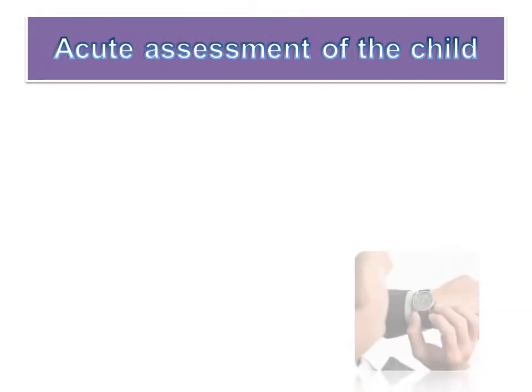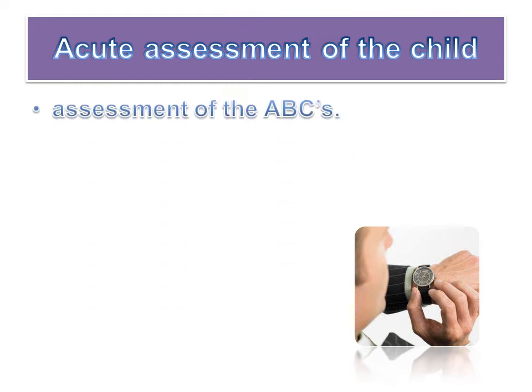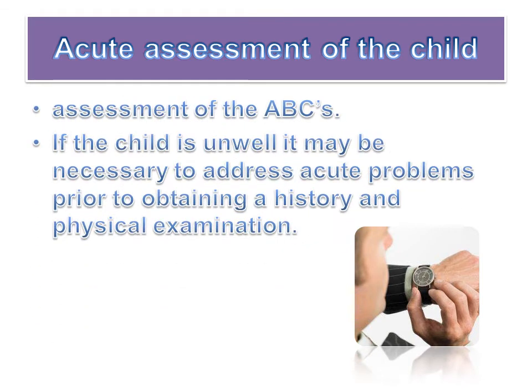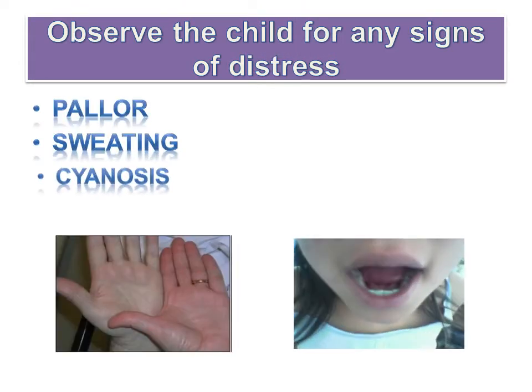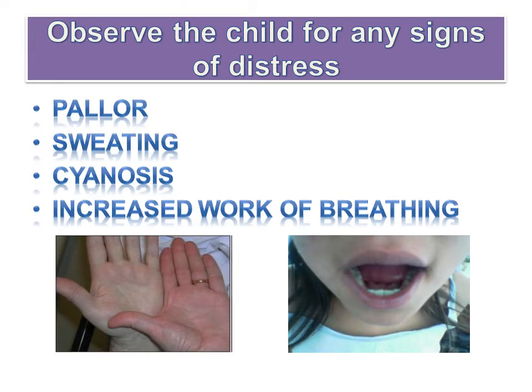Evaluation begins with the acute assessment of the child. Begin with an assessment of the ABCs. If the child is unwell, it may be necessary to address acute problems prior to obtaining history and physical examination. Observe the child for any signs of distress. This may include pallor, sweating, cyanosis or increased work of breathing. Observe the level of activity in the patient — do they appear comfortable? Are they interacting in an appropriate manner with you and their parents?